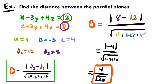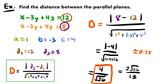You could rationalize this answer by multiplying by √26/√26. If you do that, another acceptable answer is 2√26 / 13. In either case, the approximate value of this distance is about 0.7845. That's how you calculate the distance between two parallel planes.